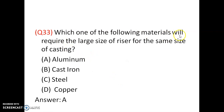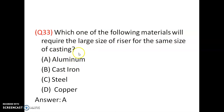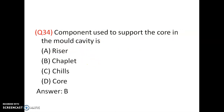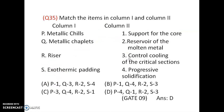Aluminum requires a large size of riser for the same size of casting. Also, chaplets are used to support the core in the mold cavity.